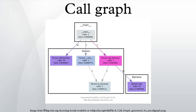A call graph is a directed graph that represents calling relationships between subroutines in a computer program. Specifically, each node represents a procedure and each edge indicates that procedure F calls procedure G.